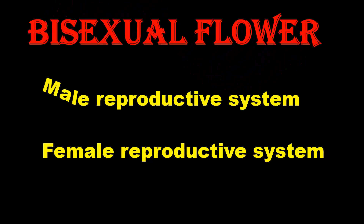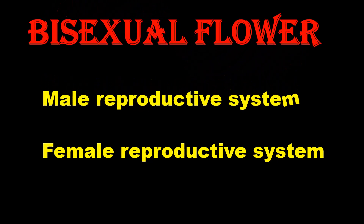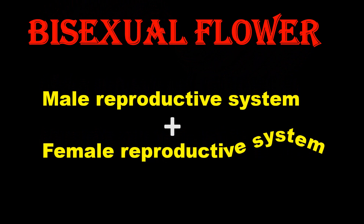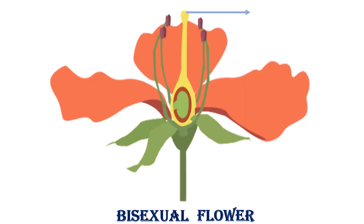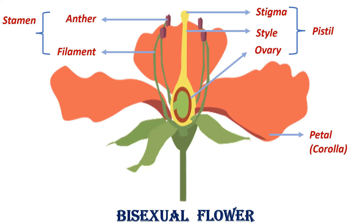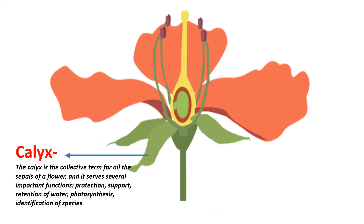A bisexual flower, also known as a perfect flower, contains both male and female reproductive organs within the same flower. Here is a breakdown of the typical structure of a bisexual flower.